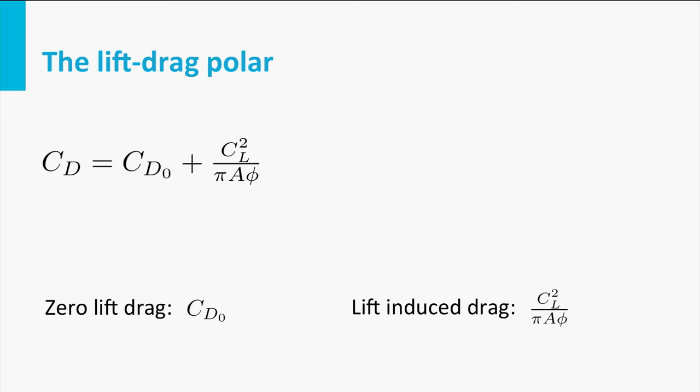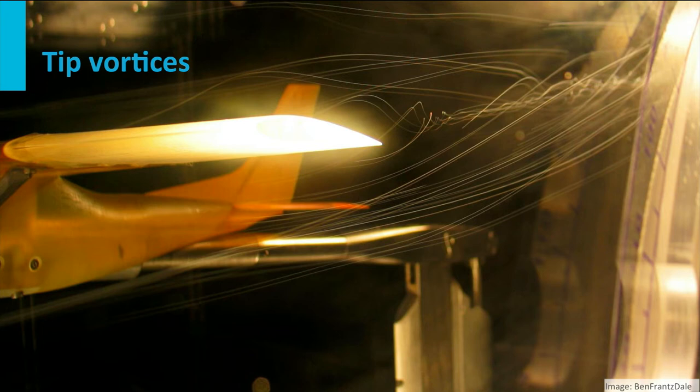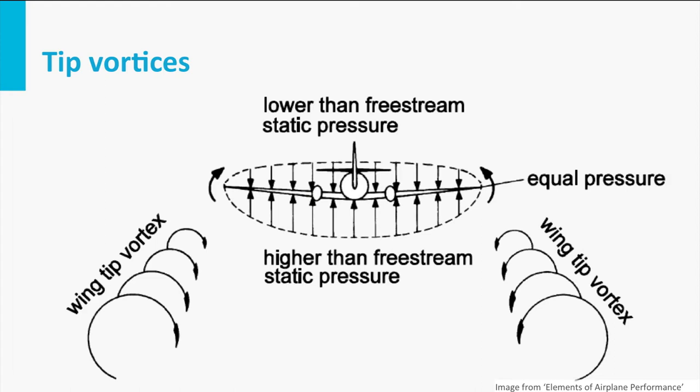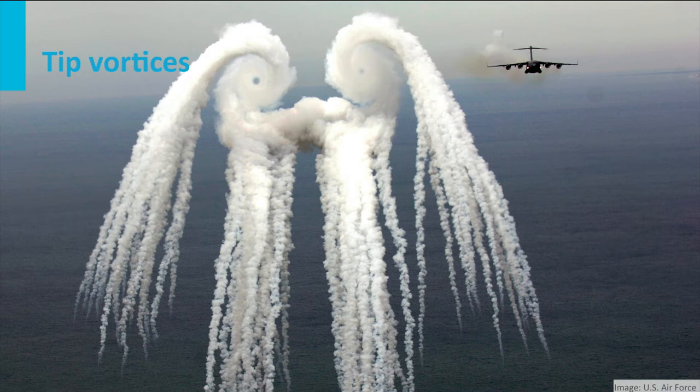When a three-dimensional finite wing generates lift, something interesting appears: tip vortices. Due to the pressure difference between the upper part of the wing and the lower part of the wing, air will start to flow around the tips in a circular motion, creating wing tip vortices. When an aircraft flies past, it leaves tip vortices in the air. You can imagine that these vortices contain kinetic energy. This is essentially the cause of aerodynamic drag. In a two-dimensional case, no tip vortices are left behind and thus there is no lift-induced drag.